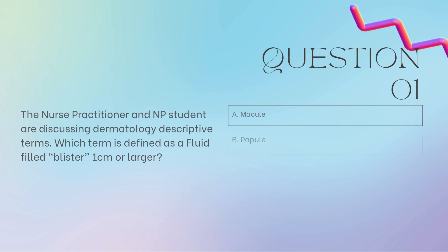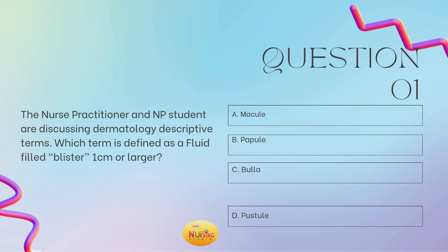Question number one states: the nurse practitioner and NP student are discussing dermatology descriptive terms. Which term is defined as a fluid-filled blister one centimeter or larger? Is it A, a macule? B, a papule? C, a bulla? Or D, a pustule? Take a moment and tell me what you got.